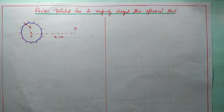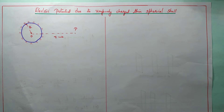Hello, my dear children. We are continuing the second chapter, Electric Potential and Capacitance. Now we can study the next topic: Electric Potential Due to Uniformly Charged Thin Spherical Shell.